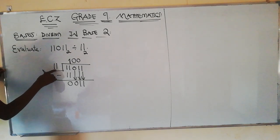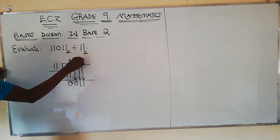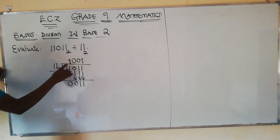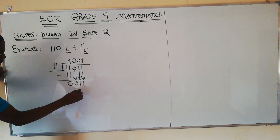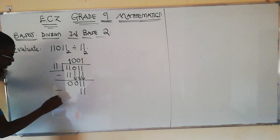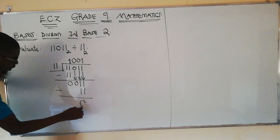Then we'll have 11 into 11, this will give us 1. Then 1 times 11, it will give us 11. Then we get the difference, 1 times 11, it will give us 0.